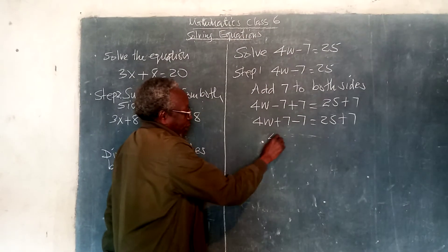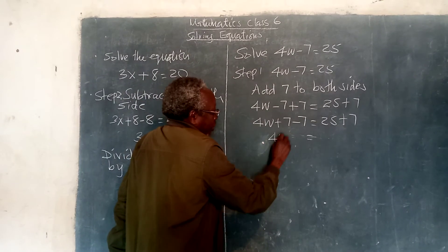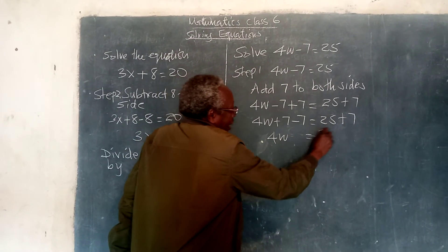So, in this case, we have 4w to this side, 7 take away 7 is 0, and 25 and plus 7 is 32.